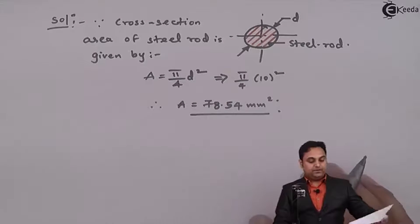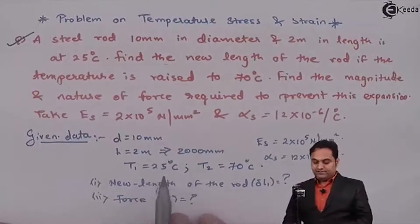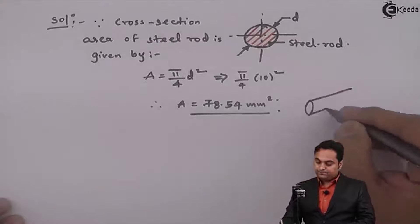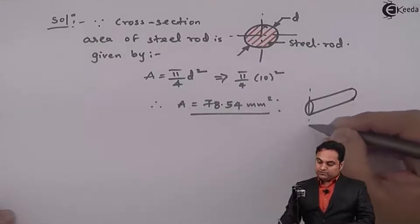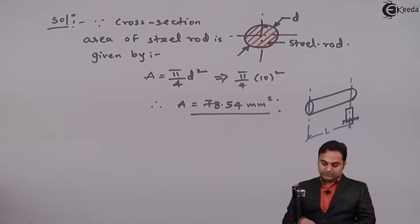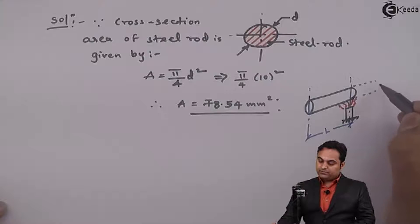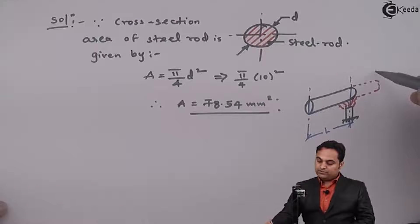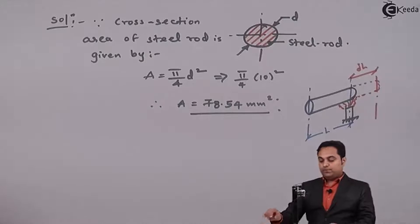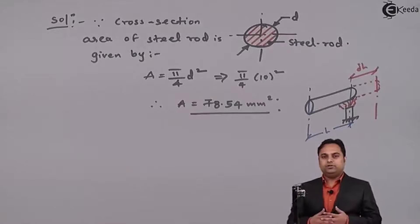Next, after getting the cross-section area, we need to find the new length of the rod. As we can see in the problem, the rod is heated from an initial temperature of 25°C to a final temperature of 70°C. The original length is L, and once heated its length will increase. This increase is the free expansion, denoted by delta L. Adding the free expansion to the original length gives the new length of the steel rod.